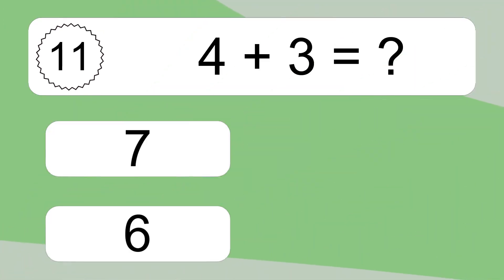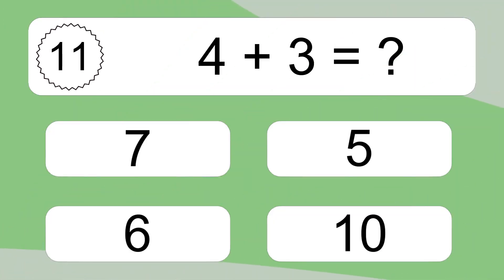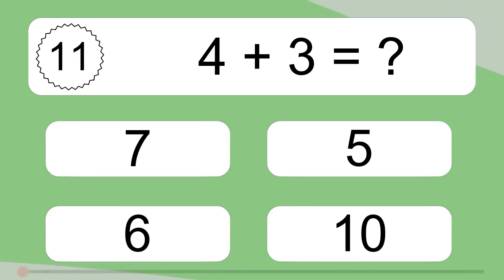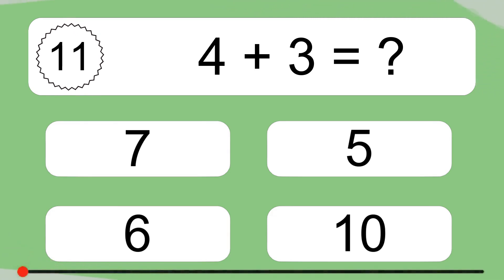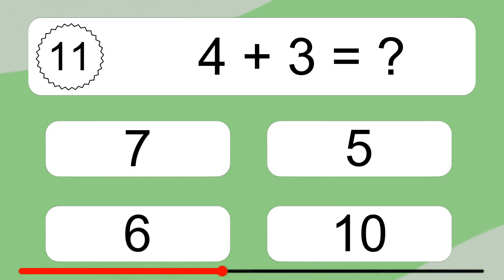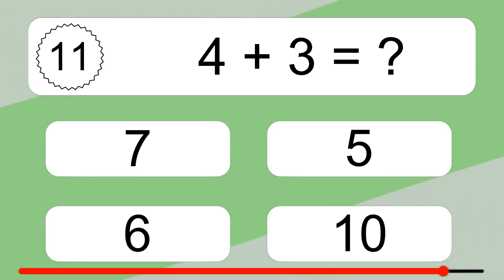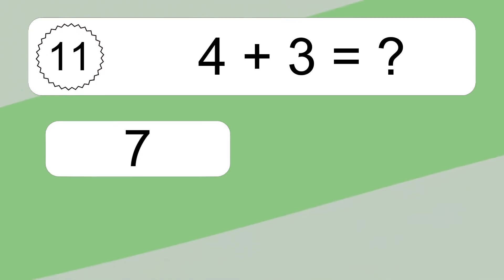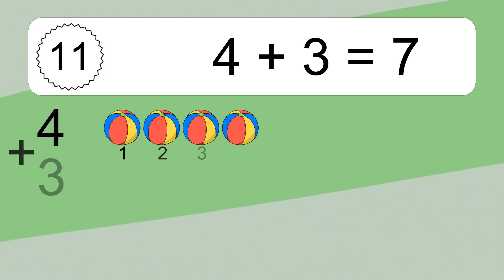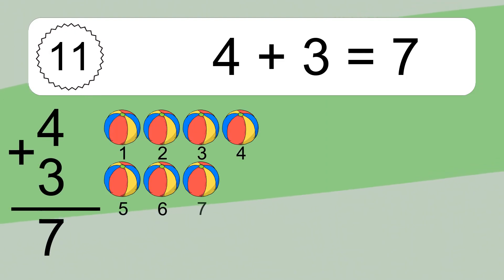4 plus 3 equals what? 4 plus 3 equals 7.